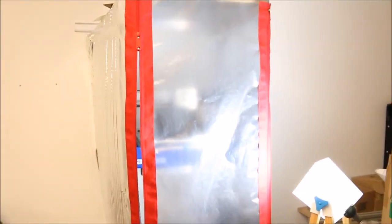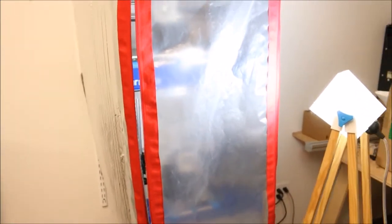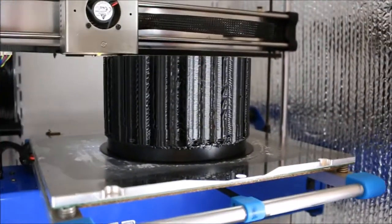This is the enclosure we use to do ABS or ASA prints when they have to be very large. Take a peek inside and see what's going on. There we are, looks pretty good.